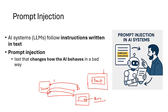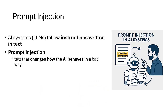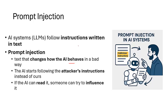Now, what happens if instead of a normal user, it's an attacker who enters some indirect values to get direct information? So the attacker manipulates values — maybe a product key, pictures, or a password — and sends them to the server. The server, without verifying, responds back. That is basically called prompt injection: a text that changes how the AI behaves in a bad way. The AI starts following the attacker's instructions instead of the original ones. And if AI can read it, someone can try to influence it.